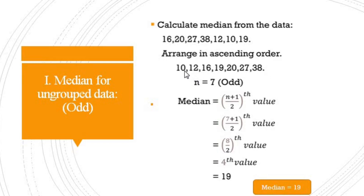Ascending order: 10, 12, 16, 19, 20, 27, and 38. The number of observations n is equal to 7. Since 7 is odd, we apply the first formula.